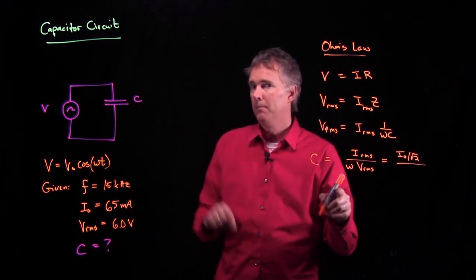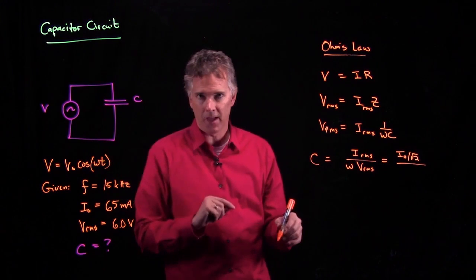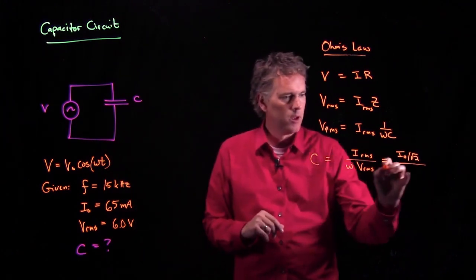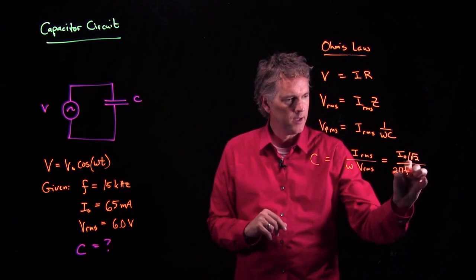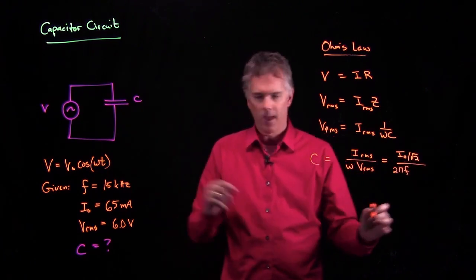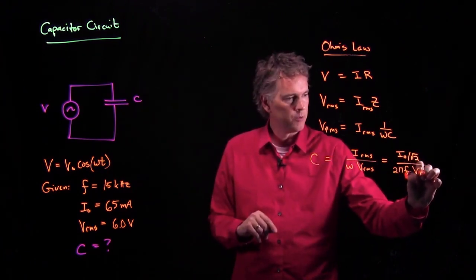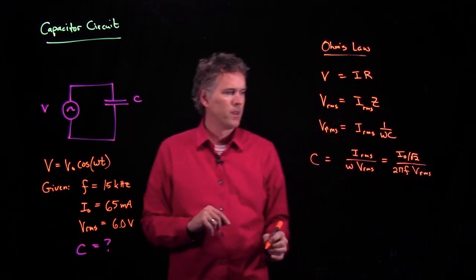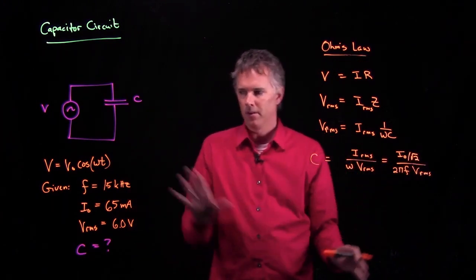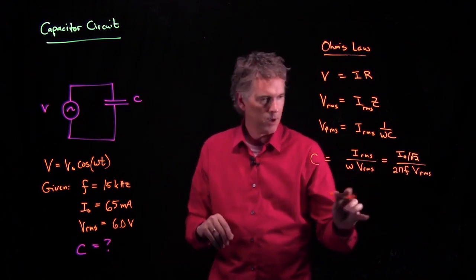We're not given Omega, but we are given the frequency F. But we remember that Omega is just 2 pi times F. And then we have V_RMS, which we are given. So now it looks like we have everything we need to solve this problem.